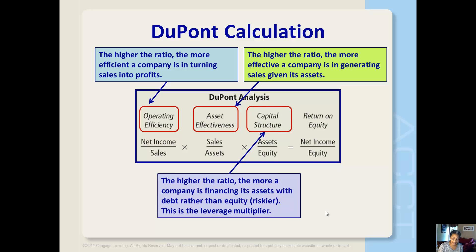The third component is a company's capital structure. For this analysis, it is calculated as assets divided by equity. This ratio is similar to the total debt to assets and debt to equity ratios in that it measures how a company has generated its assets. The higher the ratio, the more a company is financing its assets with debt rather than equity, meaning more financial leverage and a riskier capital structure. Sometimes this ratio is called the leverage multiplier or the equity multiplier.